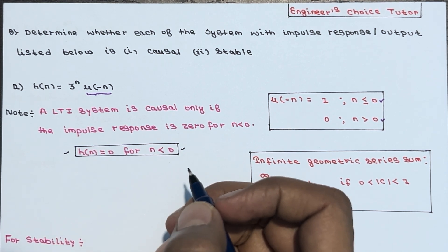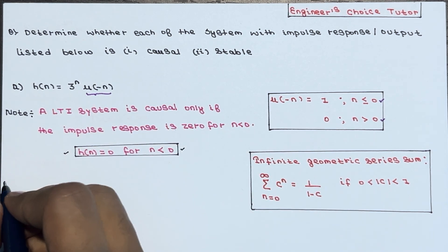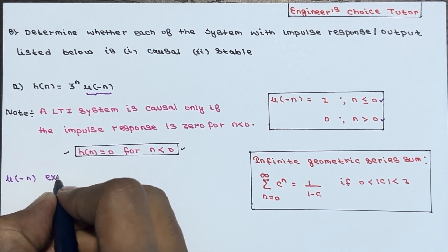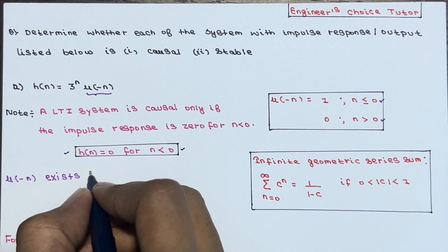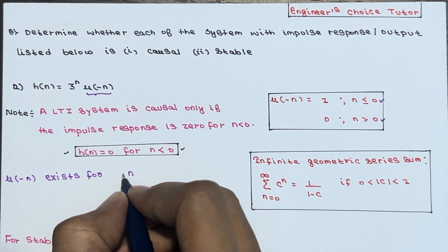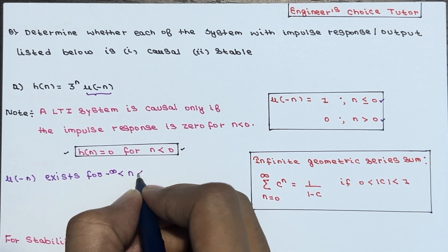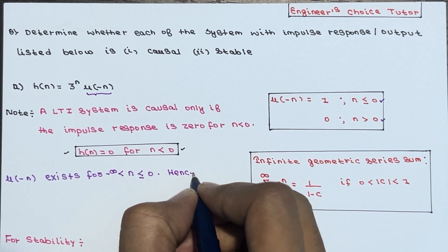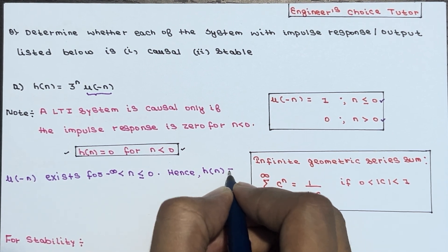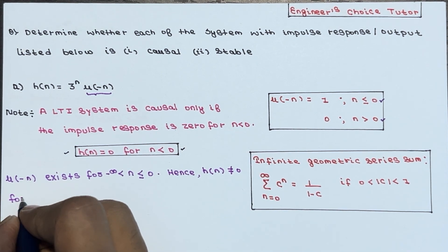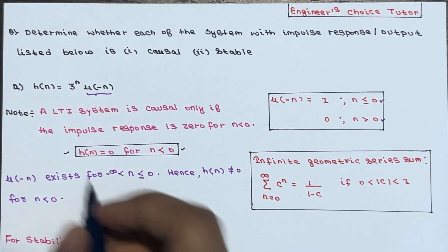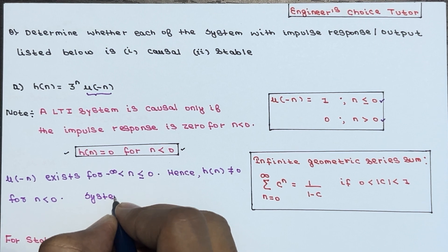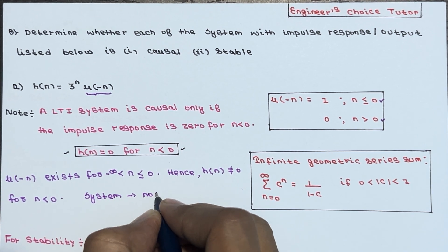If you see here, u(-n) exists for n from negative infinity up to and including 0. Hence, h(n) is not equal to 0 for n equal to 0 in this scenario. Therefore, the system is non-causal.